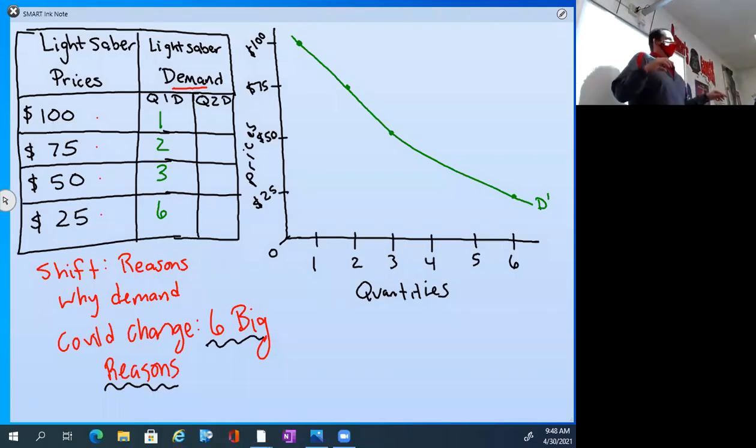So yesterday we were looking at the law of demand and I started with the idea of where do prices come from, right? And why we're sovereign from price, because we're in a free market. In a command market, the government tells you how much things are going to cost. But in a free market, producers and consumers act invisibly with each other, but yet prices are set for products like this lightsaber, right?